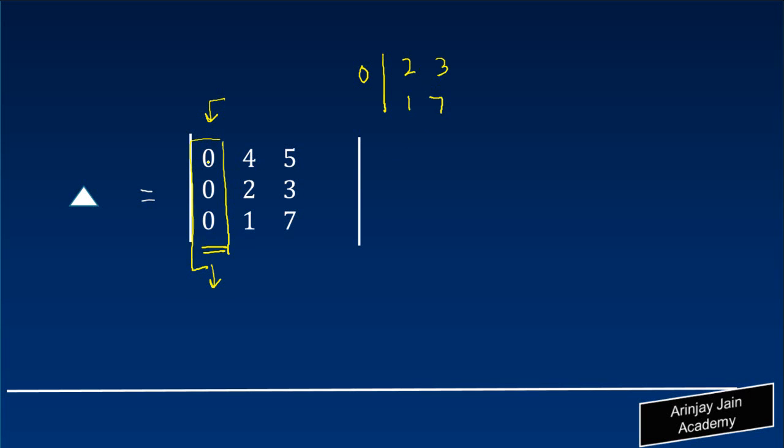Zero times 2, 3, 1, 7 - we ignore this and this. For this zero, we ignore this and this, so we get 4, 5, 1, 7. For this zero, we get 4, 2, 5, 3. In terms of signs, we have plus, minus, plus.